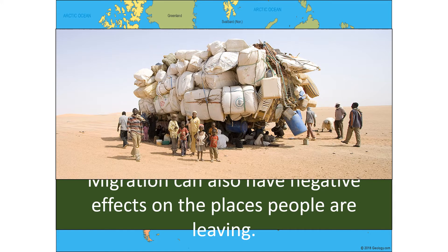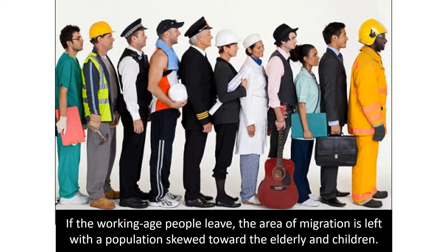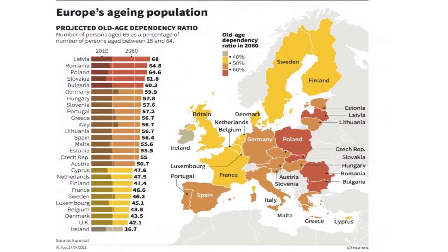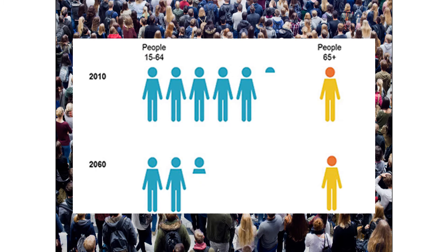Migration can have negative effects on places people leave. If working-age people leave, the area is left with a population skewed toward the elderly and children, creating a dependency ratio problem — you need working-age people to support both groups. This is especially visible in Eastern Europe, where too many elderly and too few working-age people is a major issue. Currently about five workers support each elderly person, but by 2060 it will be only about two, meaning far less tax revenue to support the aging population.